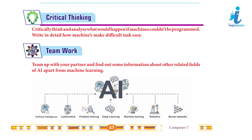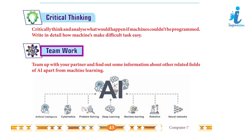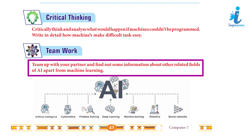Critical thinking: 4. Critically think and analyze what would happen if machines could not be programmed. 5. Write in detail how machines make difficult tasks easy. Answer: Ask students to do it by themselves. Team Work: Team up with your partner and find out some information about other related fields of AI, apart from machine learning. Answer: Ask students to do it by themselves.